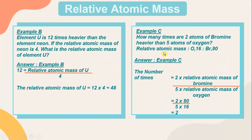Example C: how many times are 2 atoms of bromine heavier than 5 atoms of oxygen? Given: relative atomic mass of oxygen is 16 and bromine is 80. Based on the formula, the number of times equals relative atomic mass of bromine divided by relative atomic mass of oxygen. So 2 times 80, divided by 5 times 16, gives 160 divided by 80, which equals 2.